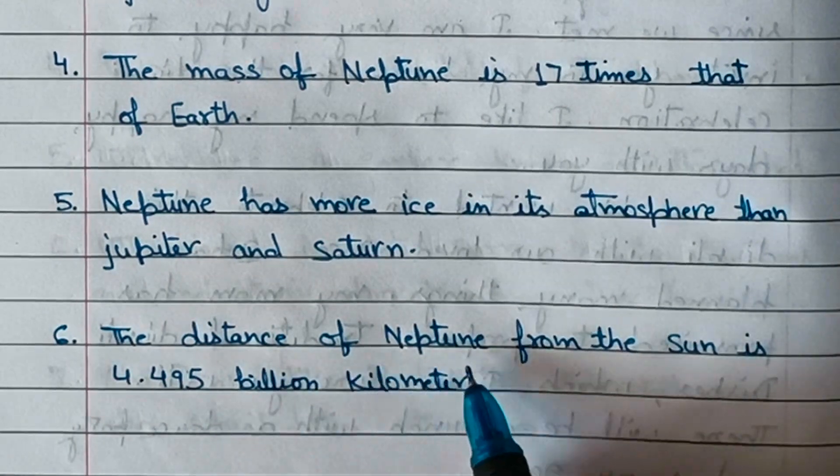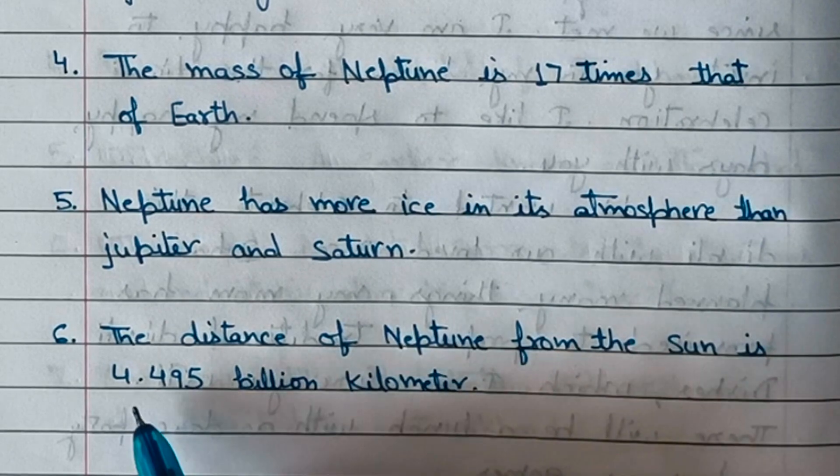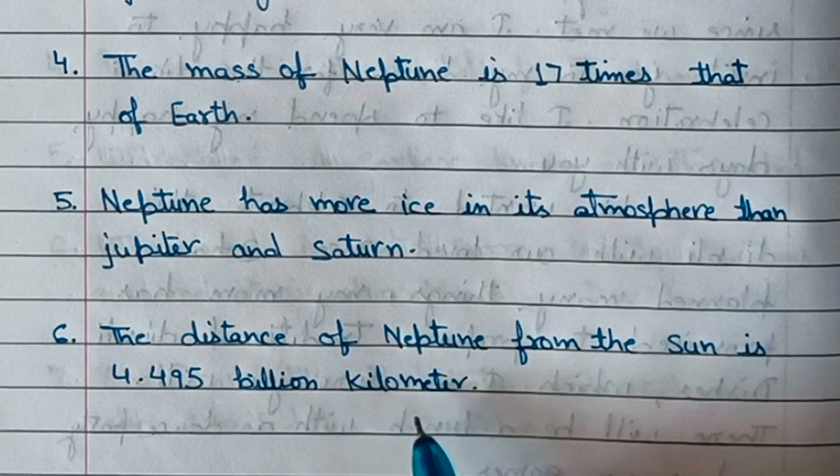The distance of Neptune from the Sun is 4.495 billion kilometers.